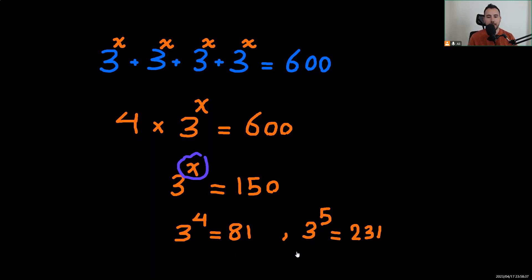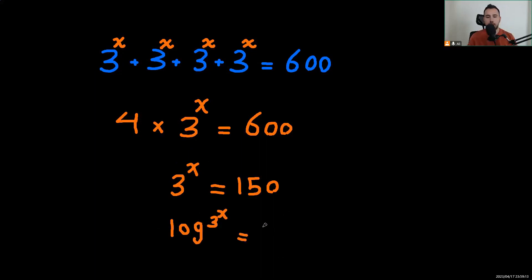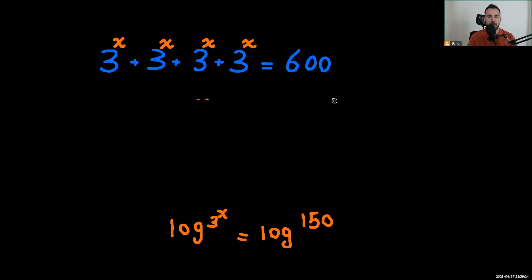To solve this equation we're going to use logarithms. If you're new to logarithms or have forgotten them, don't be afraid — we just add logarithms to both sides. The reason we use logarithms is because x is in the exponent. So we'll apply logarithm to both sides, giving us logarithm of 3 to the power of x equals logarithm of 150.